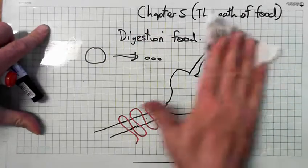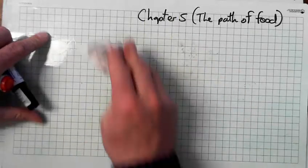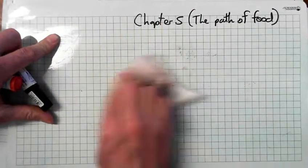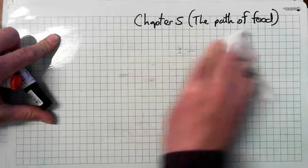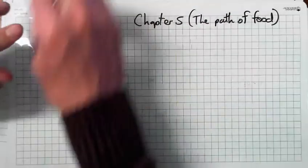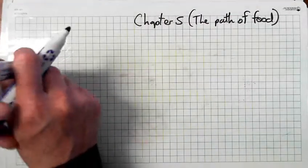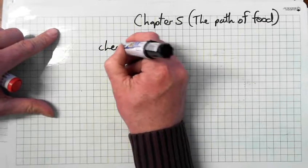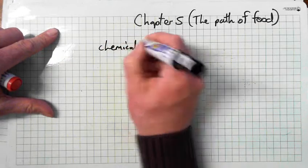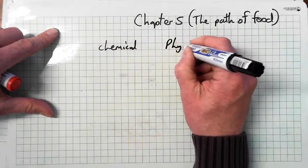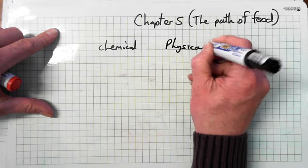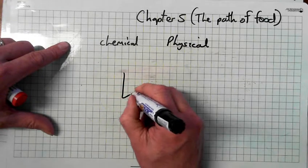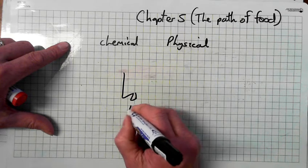There are two types of digestion: chemical and physical. In your mouth — here's your mouth with your teeth — this is called the buccal cavity.